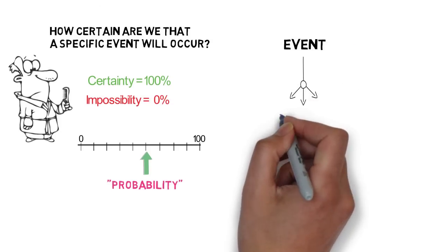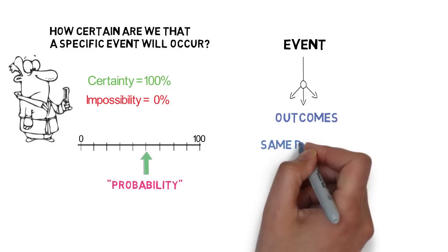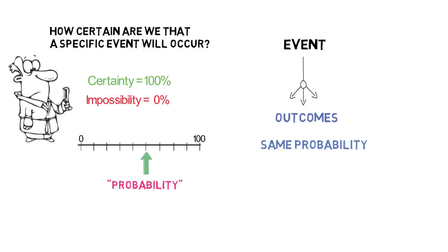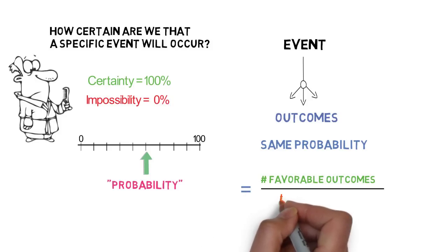An event has several possible outcomes. When all outcomes have the same likeliness, we say they have the same probability. If this is the case, the probability of an event occurring is equal to the number of outcomes where it can occur divided into the total number of possible outcomes.